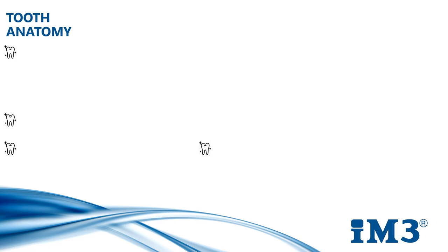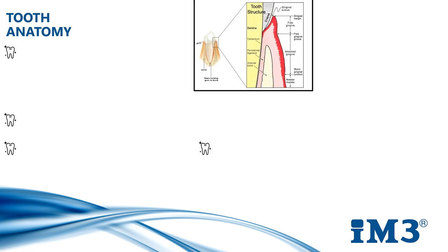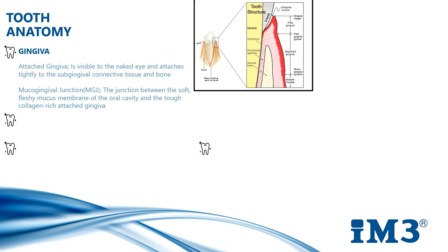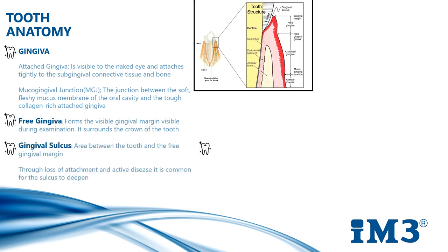Attached gingiva is visible to the naked eye and attaches tightly to the subgingival connective tissue and bone. It's keratinised to withstand the stress of tearing and ripping food. The mucogingival junction is the junction between the soft fleshy mucous membrane of the oral cavity and the tough collagen-rich attached gingiva. The MGJ stays in place through life. The gingiva around it may change in height due to pathological change such as loss of attachment, recession or hyperplasia.